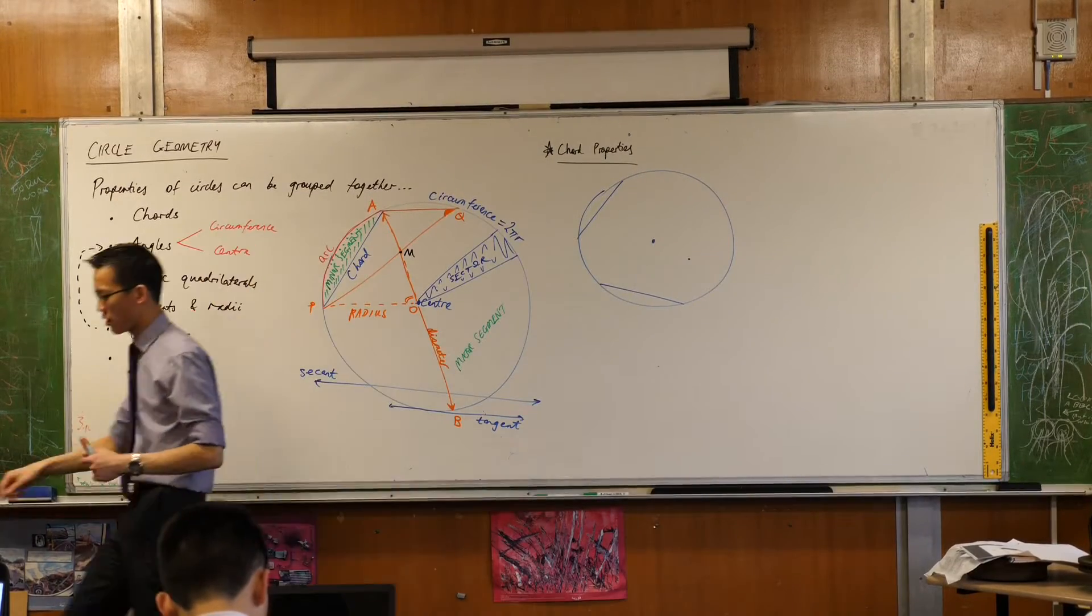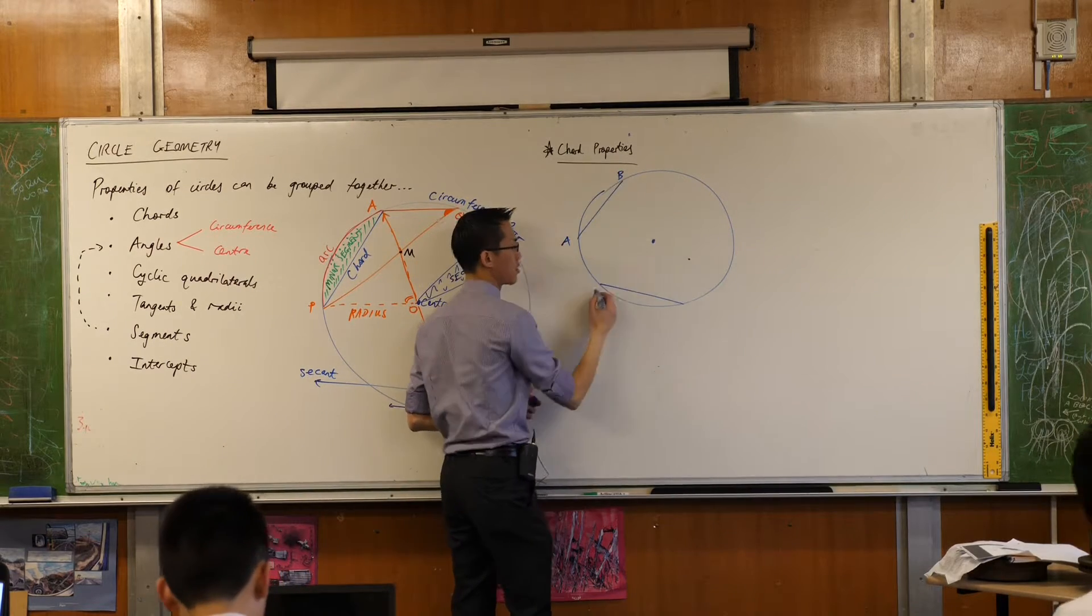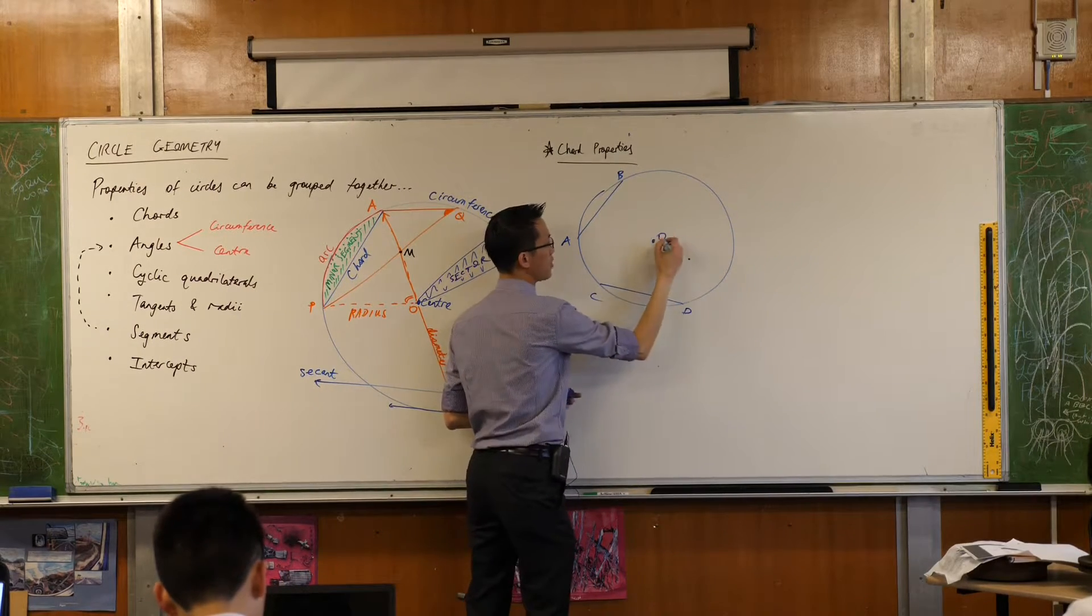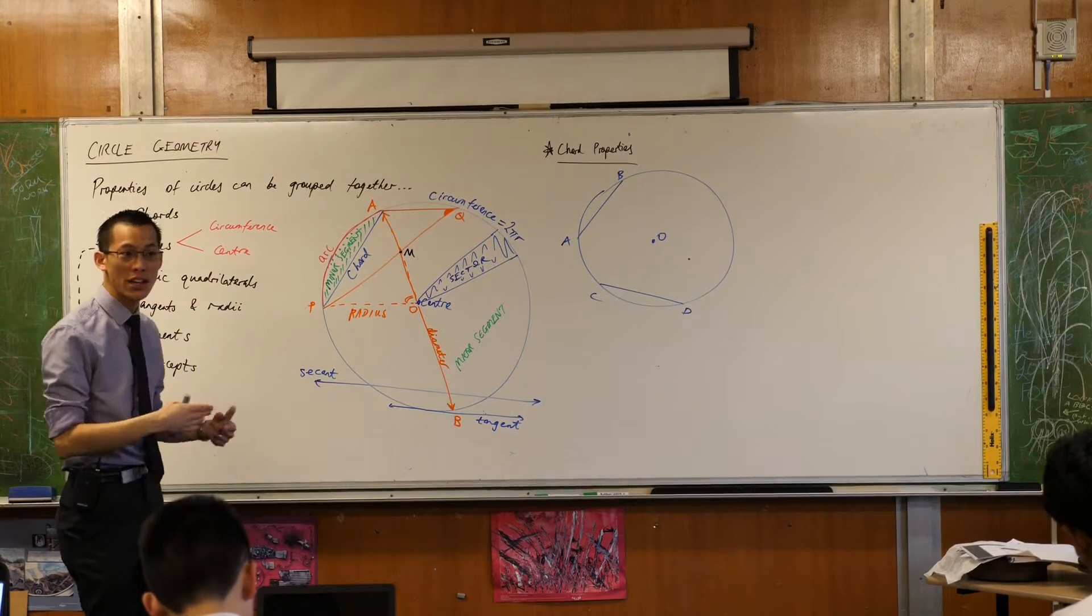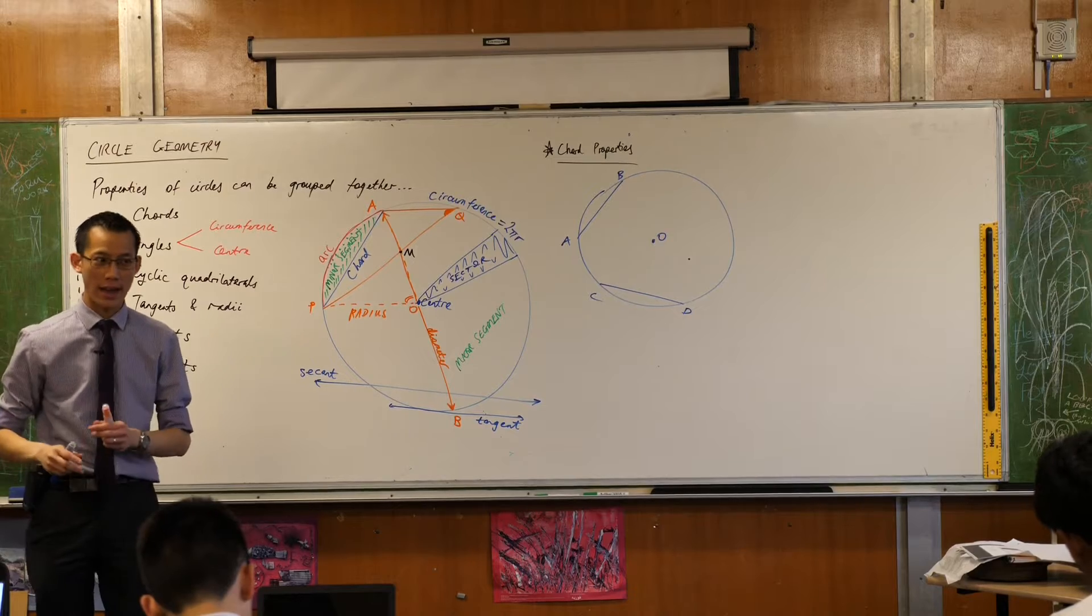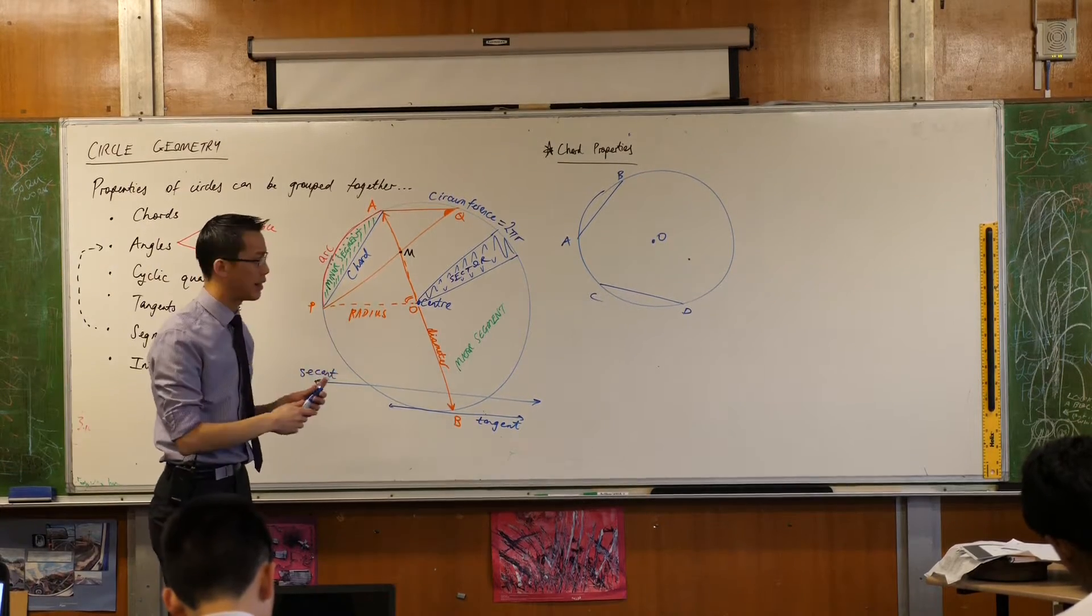We'll give them some names shall we? Let's call this one AB, let's call this one CD, you've got your center O. I want you to draw, join AB and CD to the center in the shortest way possible. Can you do that? I'll give you a second to catch up. Make sure you've got everything labeled out.